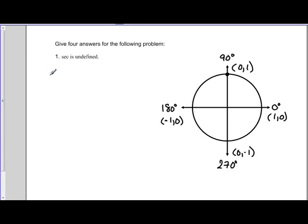Alright, this next problem says give four answers for the following problem: secant is undefined. So we have to find four angles that have a secant that is undefined.